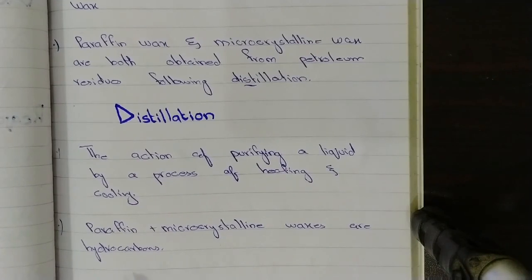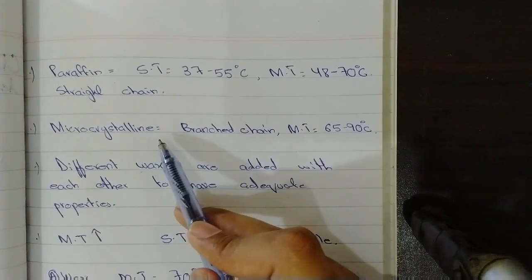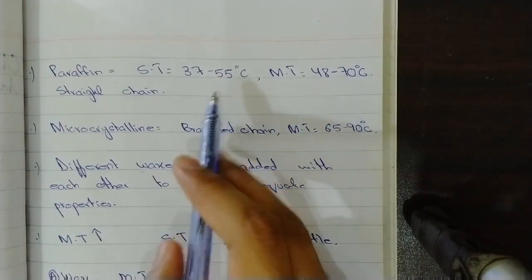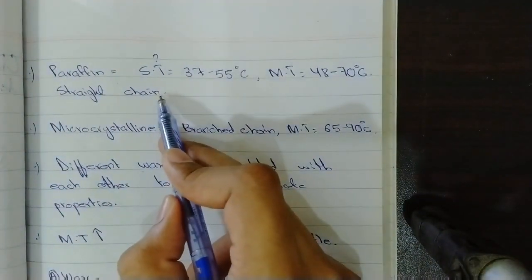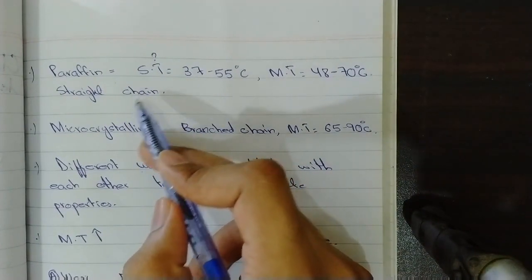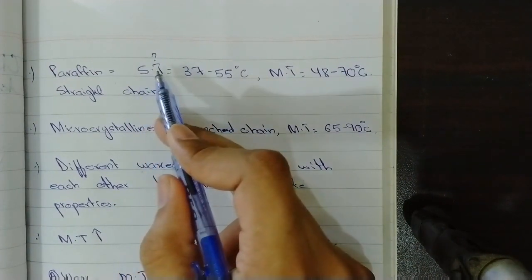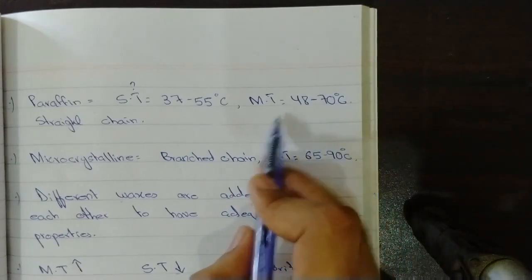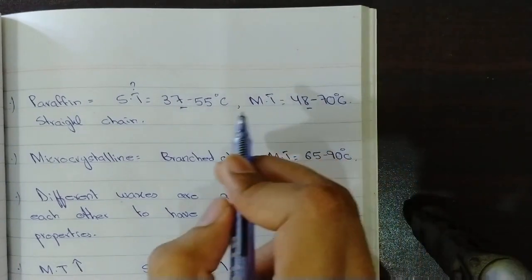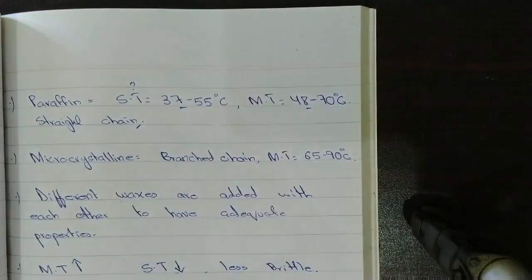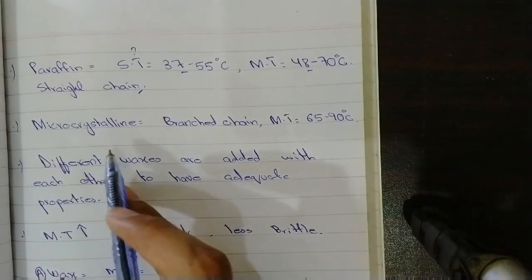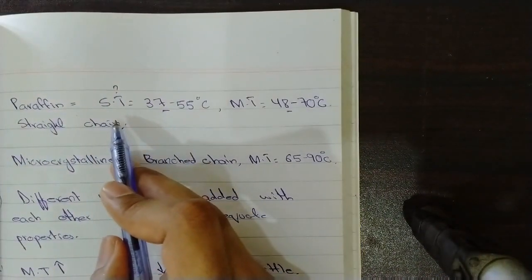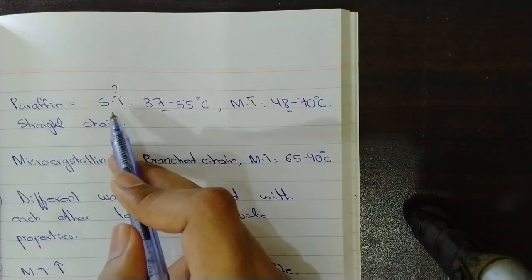By purifying a liquid we can then extract the paraffin and microcrystalline waxes because they are hydrocarbons. Paraffin and microcrystalline waxes are hydrocarbons. Certain properties of paraffin and microcrystalline waxes: paraffin wax has the softening temperature of 37 to 55 degrees centigrade. Now what is softening temperature? Basically it is the temperature at which crystalline changes occur in the wax and it becomes softer and moldable for use. And it has the melting temperature 48 to 70 degrees centigrade. These magnitudes are important to be memorized. Paraffin waxes are straight chain hydrocarbons. Now the microcrystalline wax: microcrystalline waxes are branched chain hydrocarbons. They have the melting point of 65 to 90 degrees centigrade.